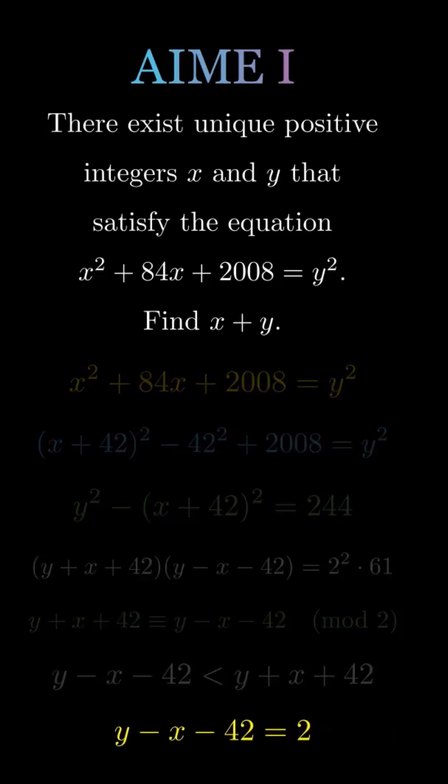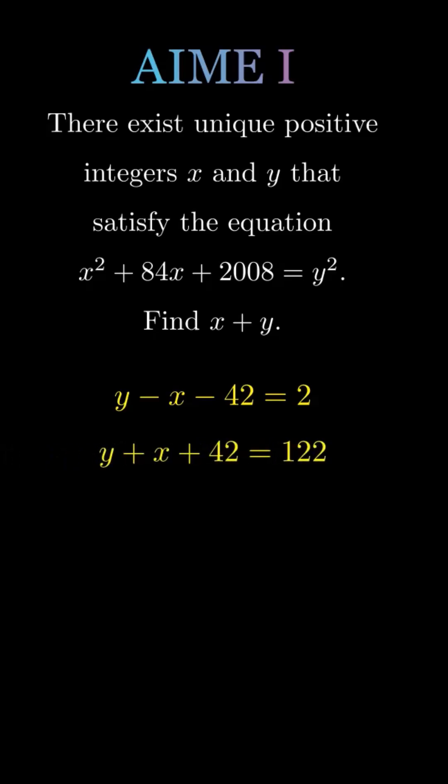Therefore, the only possible case is y minus x minus 42 equals 2 and y plus x plus 42 equals 122. So x plus y equals 80.